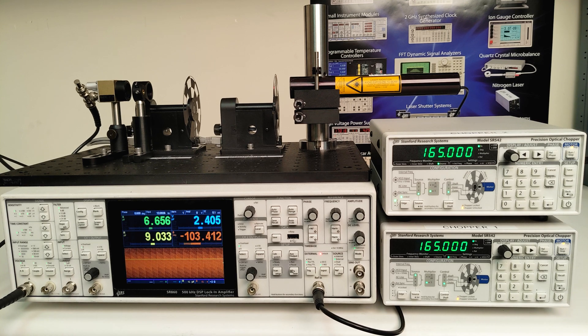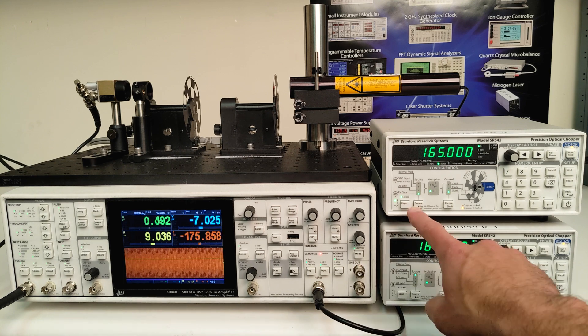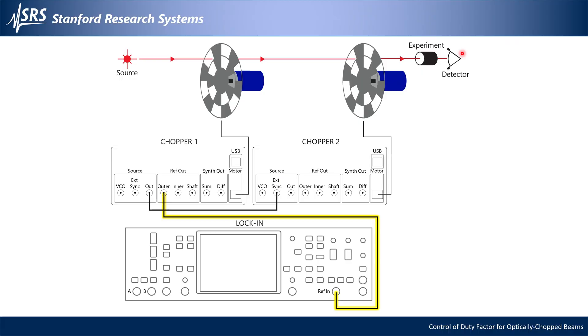Chopper 2 keeps its source as external sync, and we see that it is locked to the signal coming from the source out of chopper 1. Finally, I've connected the photodiode output to the lock-in signal input A.